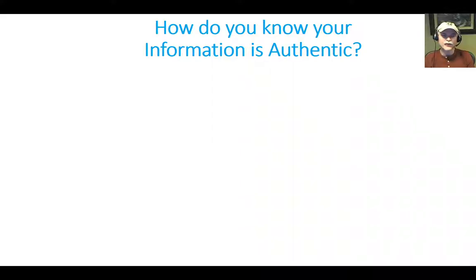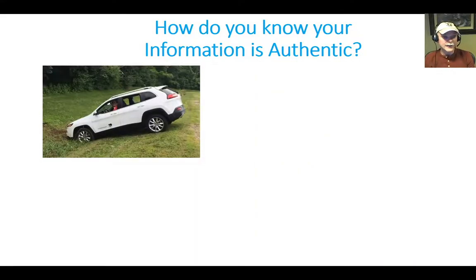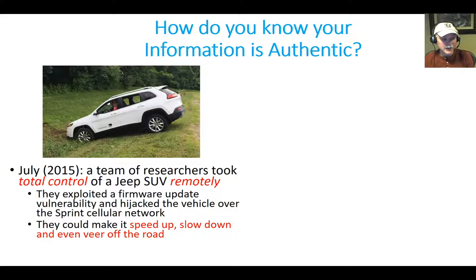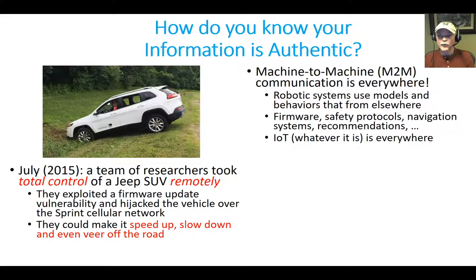As a flip side, you might ask yourself a different question: when you use somebody else's information that they've given you, how do you know it's even authentic? In 2015, a team of researchers figured out how to exploit a firmware update bug to take control of a Jeep remotely over the Sprint network, and they were able to make it speed up, slow down, and veer off the road entirely — remotely. Which is a little scary given the complexity of cars today. And really this is the rise of machine-to-machine communication, which is pretty much everywhere. Robotic systems use models that are generated elsewhere by machines. Firmware updates, safety protocols, navigation systems — all of these things are done in a machine-to-machine fashion.